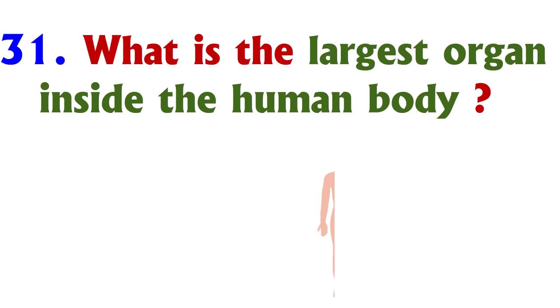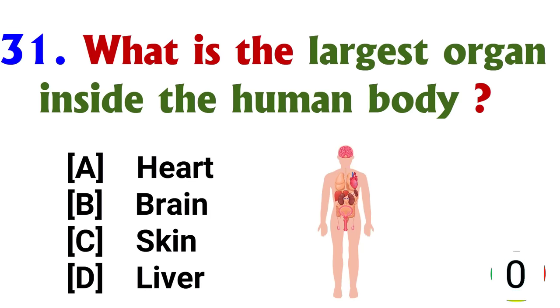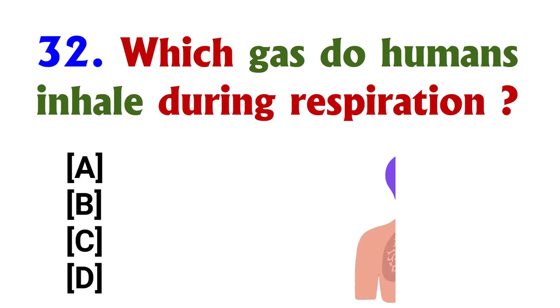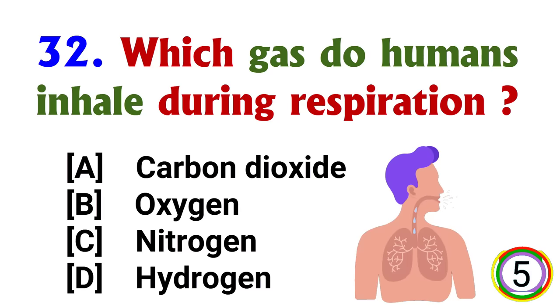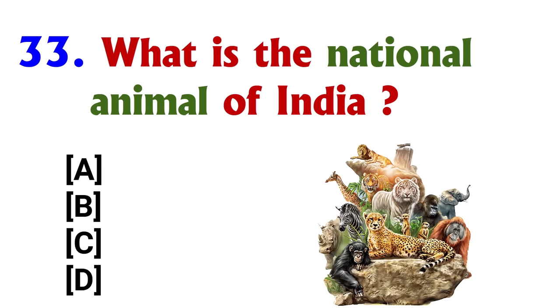What is the largest organ inside the human body? Answer: option D, Liver. Which gas do humans inhale during respiration? Answer: option B, Oxygen.